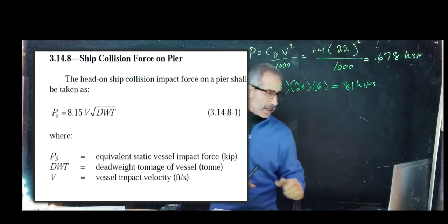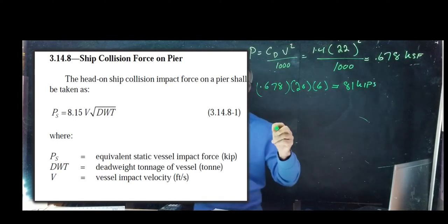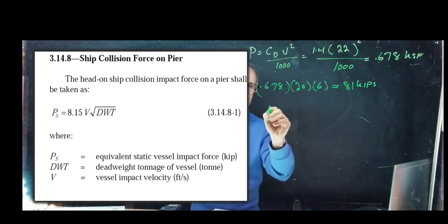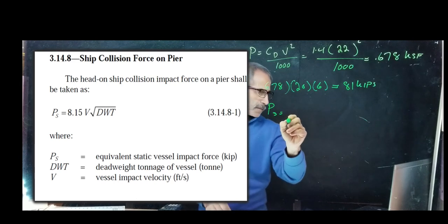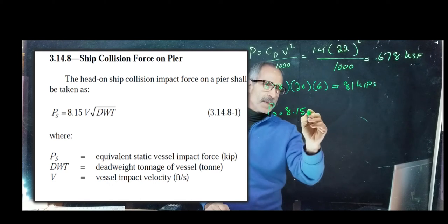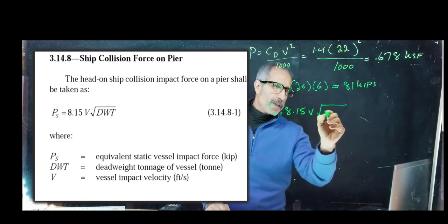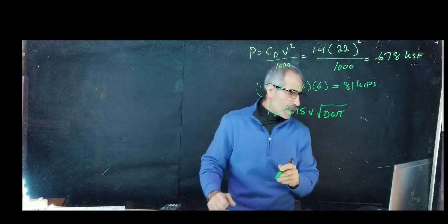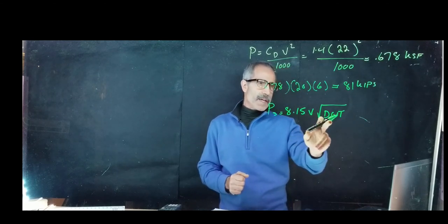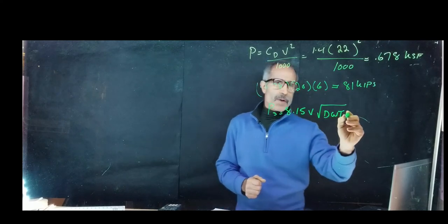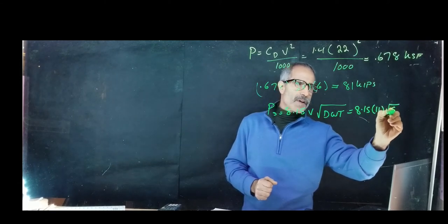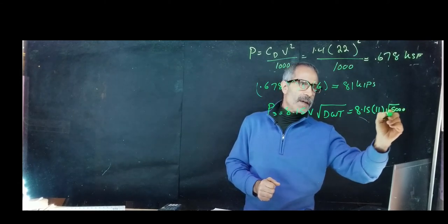Looking at this step, the formula is given as PS = 8.15 times V times the square root of the weight of the ship. The velocity is 11 and the weight of the ship is 5000 tons. If you plug that in, it becomes 8.15 times 11 times the square root of 5000 tons.